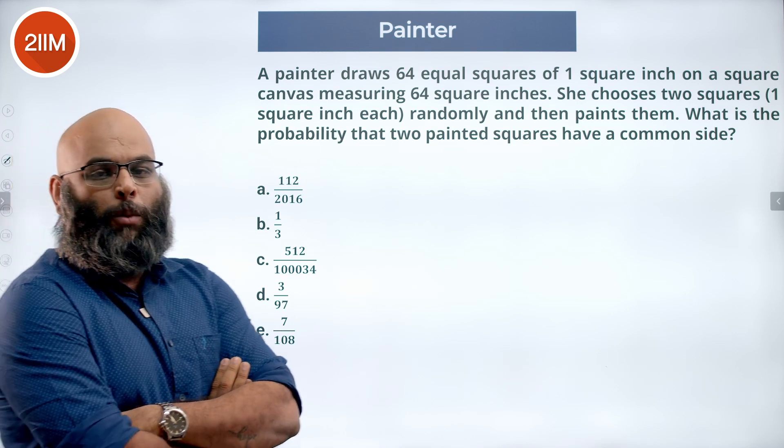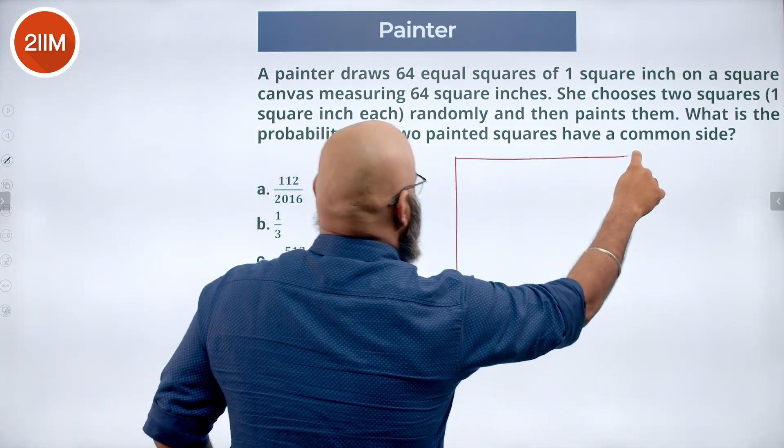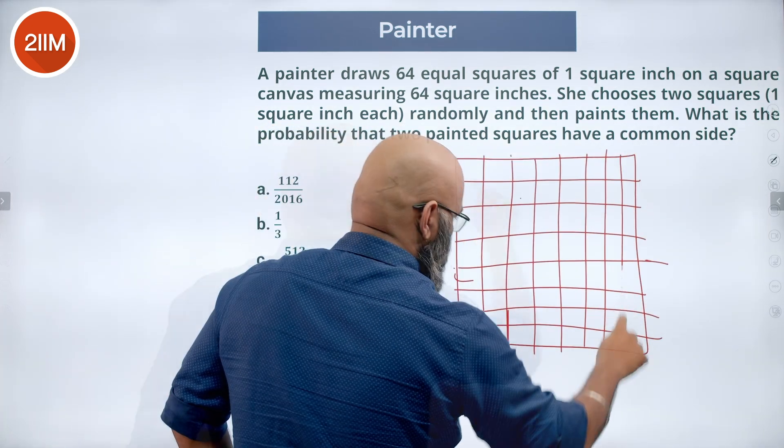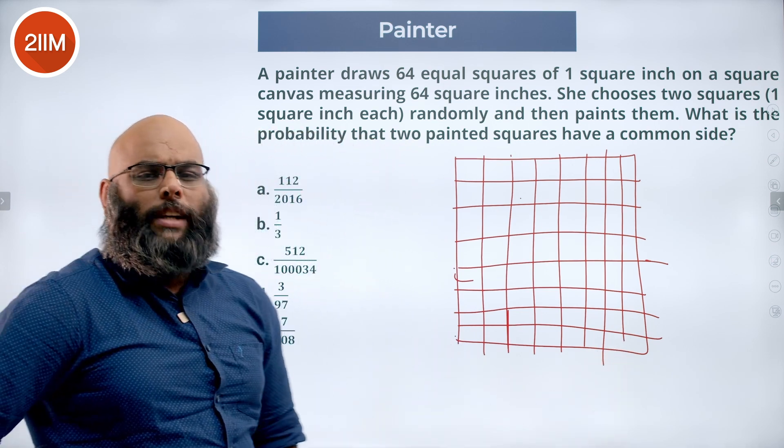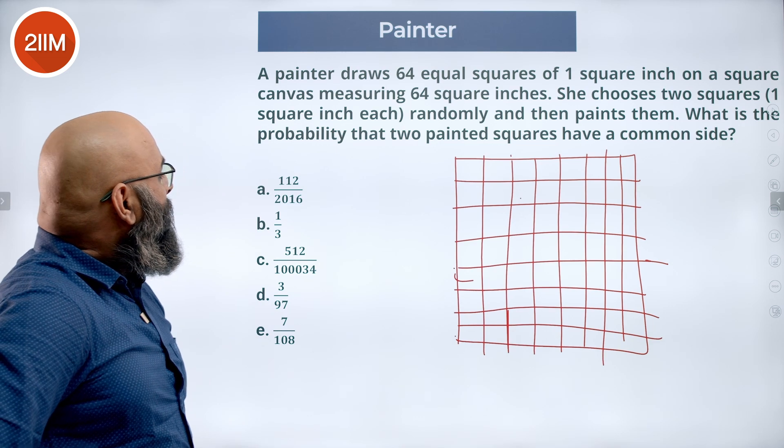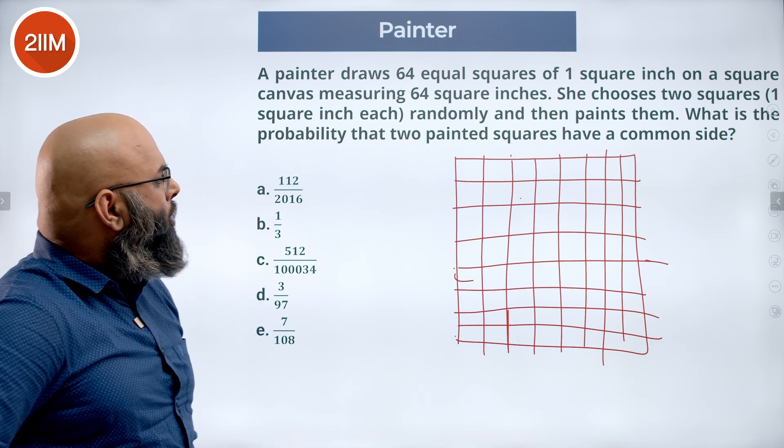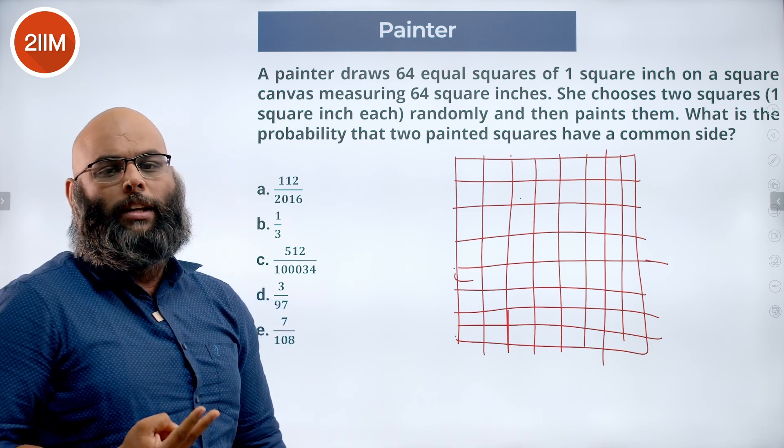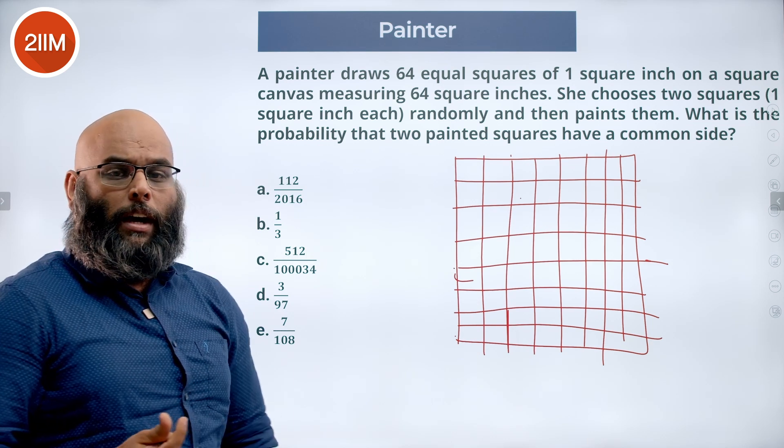Now let's assume a chess board here that gives us a better understanding—64 squares. So let's say there is a chess board here or an 8 x 8 grid that we have here. Now the question is what is the probability that the 2 painted squares have a common side? So she is going to choose 2 squares and she is going to paint them, and the probability is being asked.